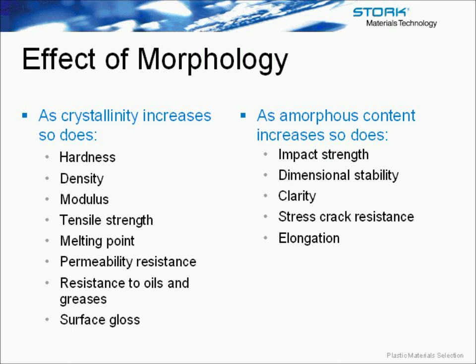This next slide will summarize the effect of the degree of crystallinity in a semi-crystalline polymer. As crystallinity increases, chemical resistance, tensile strength, and melting point will increase. Oppositely, as amorphous content increases, impact strength, elongation, and dimensional stability will increase.